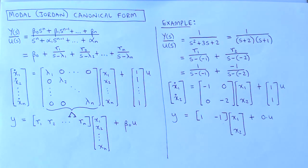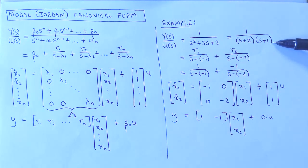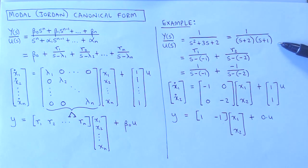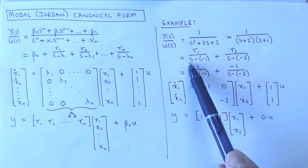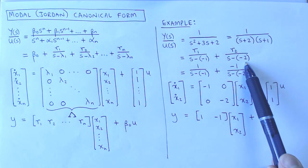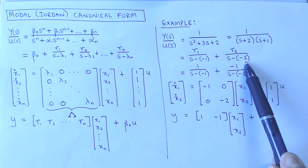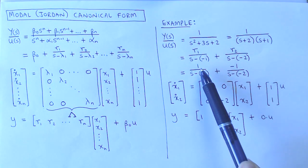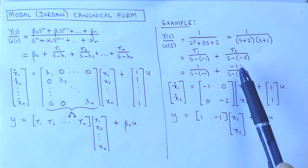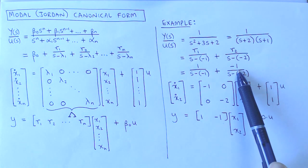Let's work through the same example as before. The denominator of the transfer function can be factorized into s plus 1 and s plus 2, meaning the poles of the system are located at minus 1 and minus 2. We now use partial fraction expansion to separate the transfer function into two first order transfer functions, and we easily calculate the values of the residuals as R1 equal to 1 and R2 equal to minus 1.